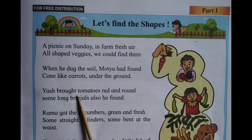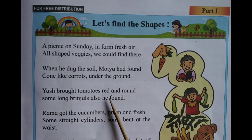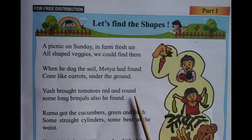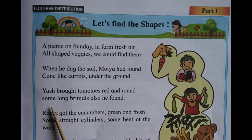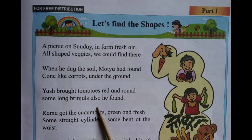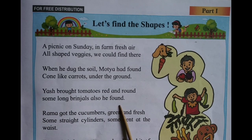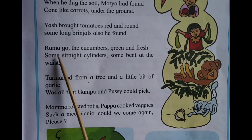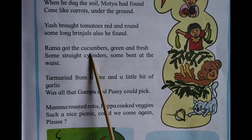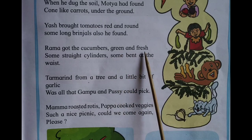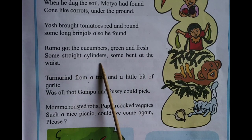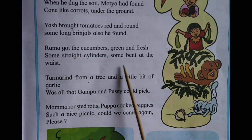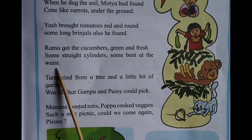Yash brought tomatoes, red and round, some long brinjals also he found. Rama got the cucumbers, green and fresh, some straight cylinders, some bent at the waist.